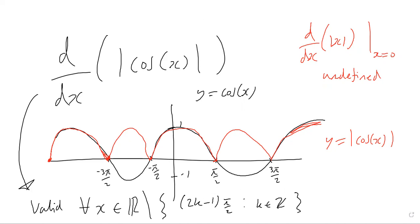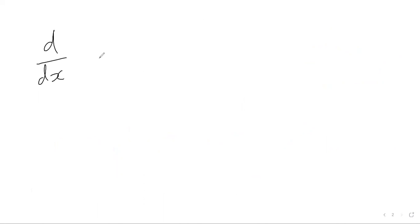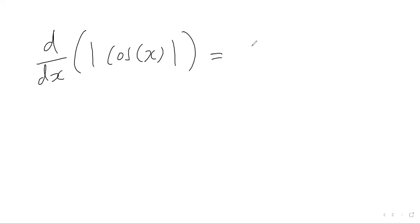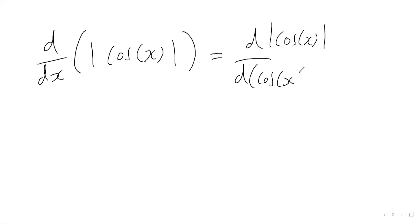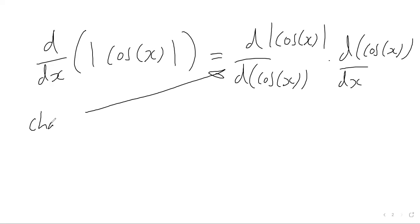Now let's go ahead with the differentiation. It's going to be a case of using the chain rule, because we have this modulus function with the cosine function inserted inside it. So it's just going to be differentiating the modulus of cos of x with respect to cos of x, and then multiplying that by the derivative of cos of x with respect to x. This is the chain rule.